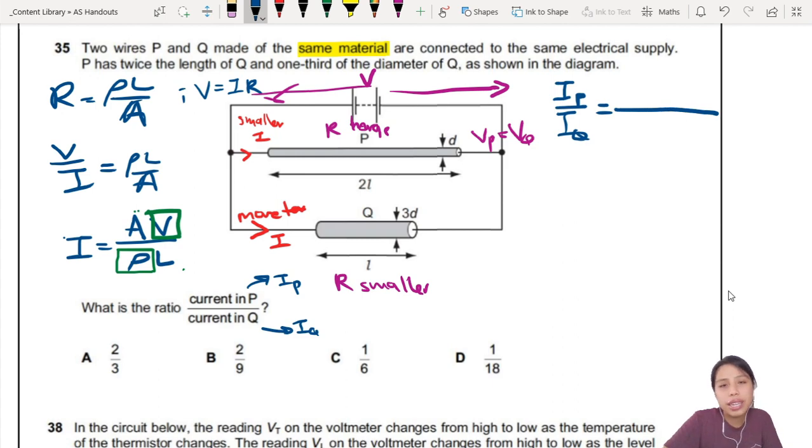Now the rest constants, they will just cancel out top and bottom. So what's left is area of P over length of P, and then area of Q over length of Q. I have to rearrange a bit. AP, LQ, and then down there will be AQ, LP. There.